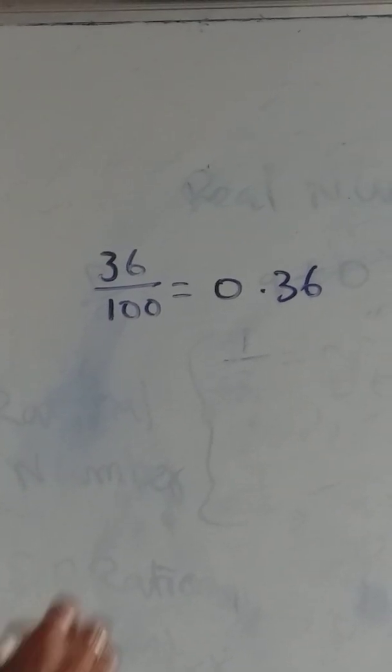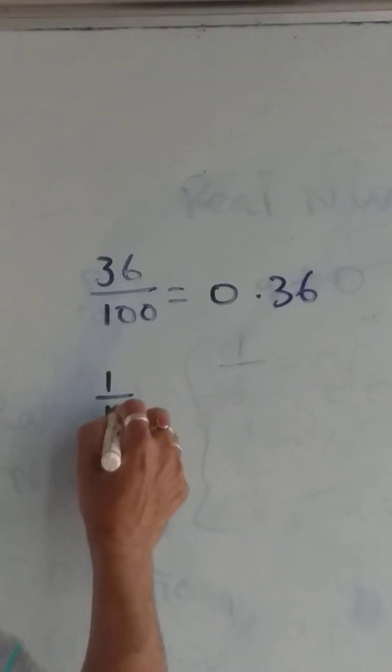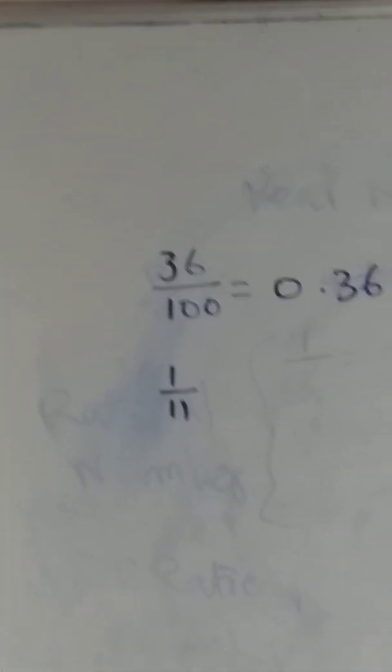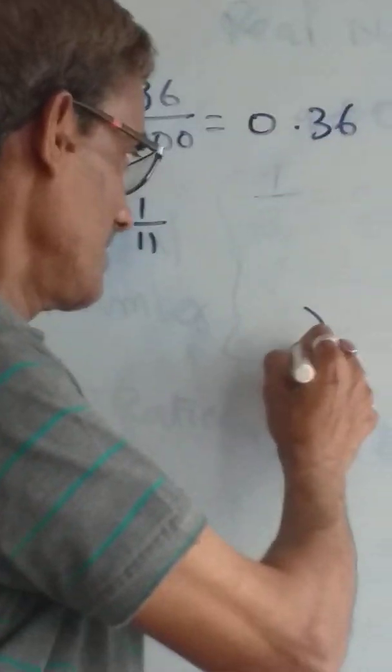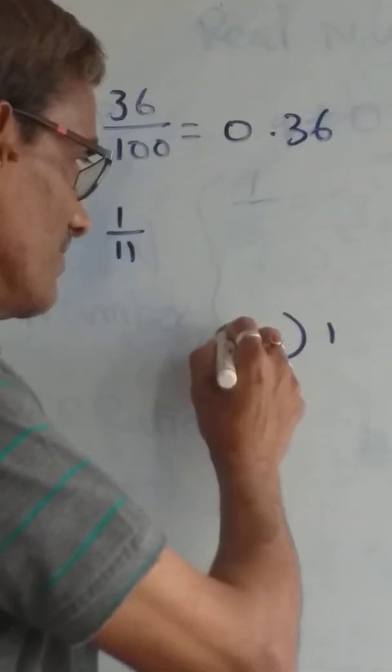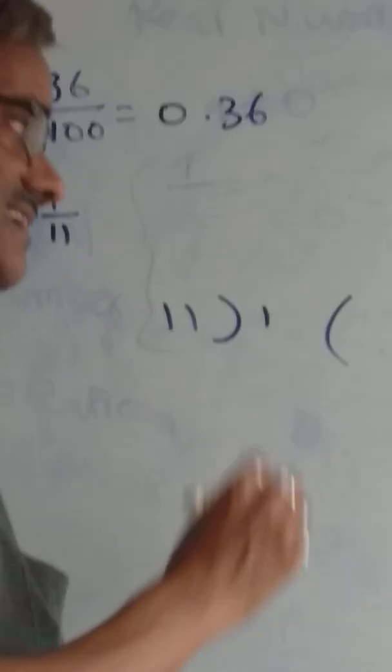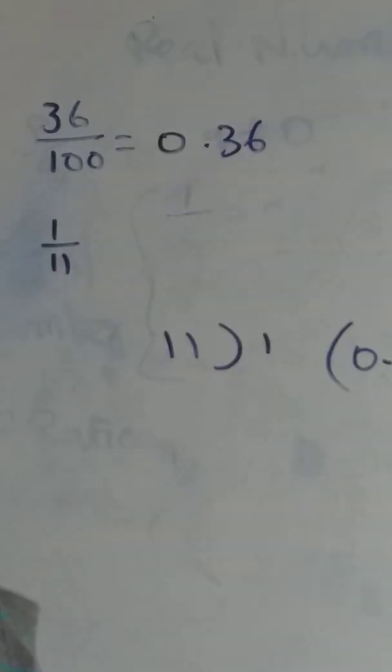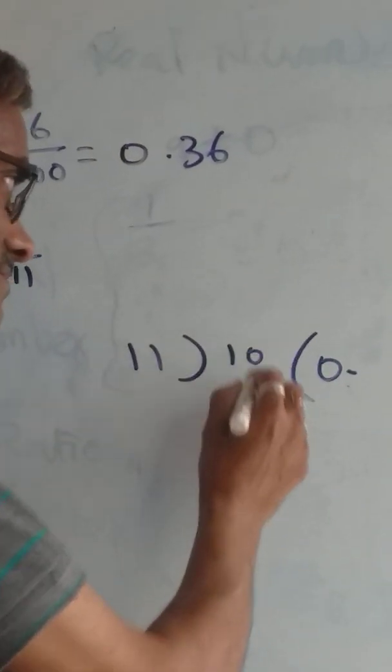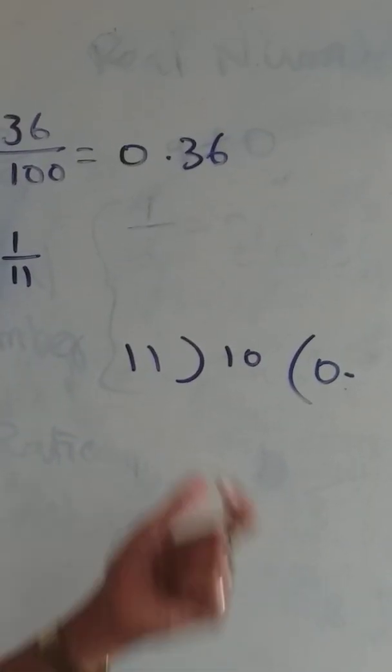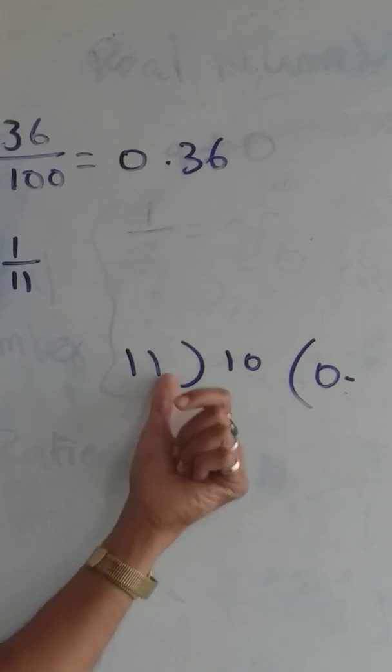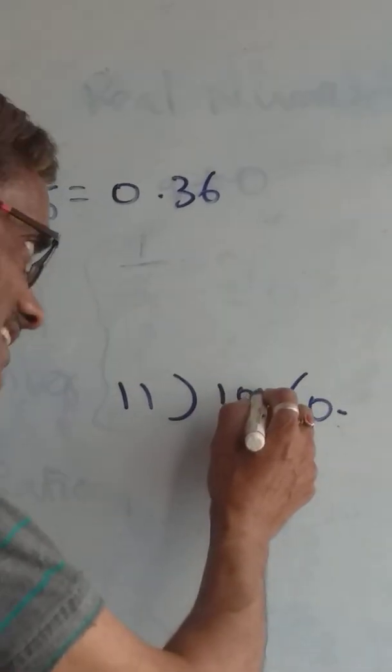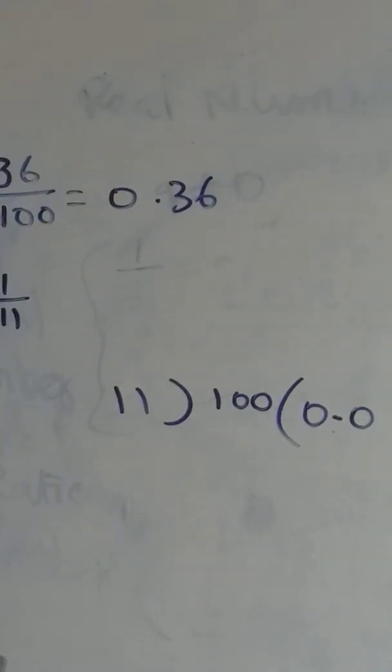Another example: 1 by 11, or 1 divided by 11. I'll show you how to divide it. We can't divide 1 by 11, so put a point there: 0 point. Add zeros: 10, still less than 11, so add another zero.